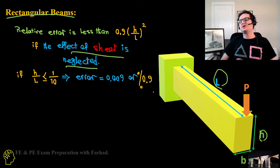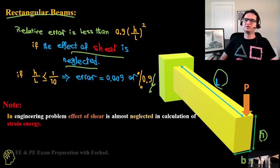We can easily see how small that number is—it's close to zero and we can neglect it. That's why in engineering problems, the effect of shear is almost neglected in calculation of strain energy.